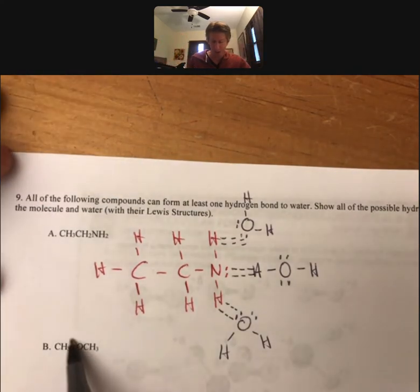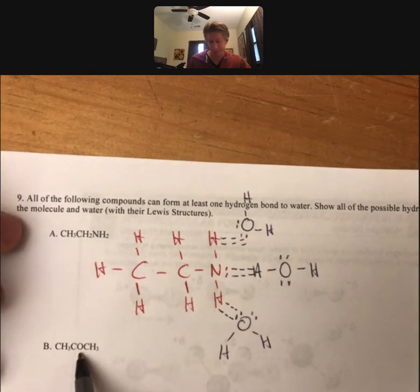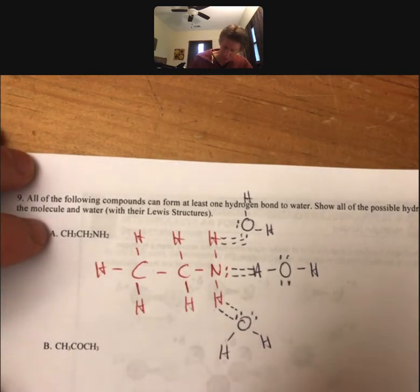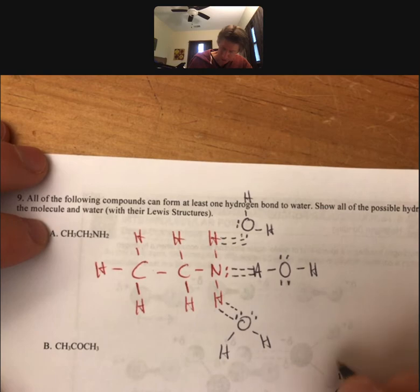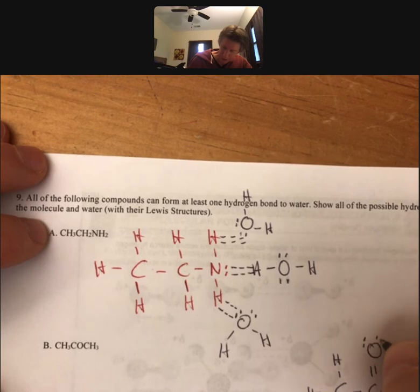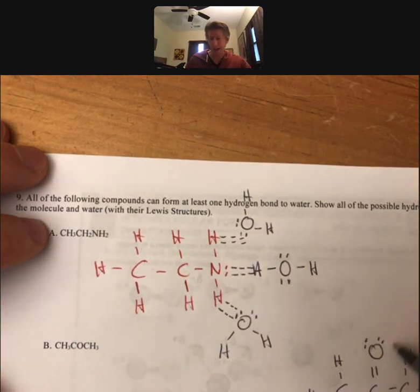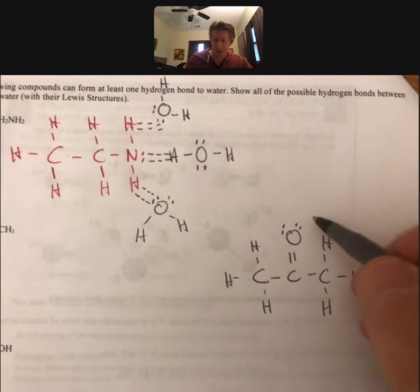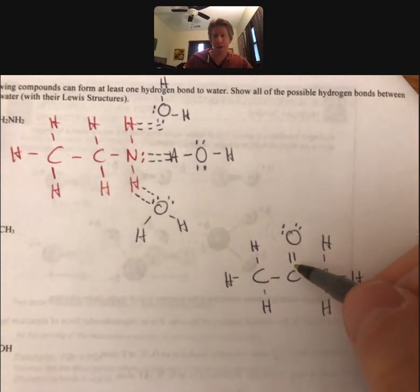Now I'll talk about B for a minute. I'll draw the Lewis structure over here. It's going to have a CH3, then a C double bond O. That O has two pairs of electrons, and that's going to be where the hydrogen bonds form with the water molecules, only there.